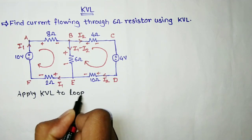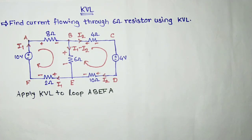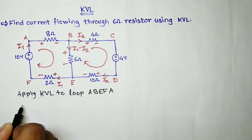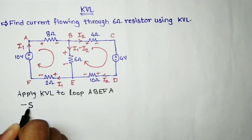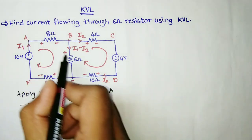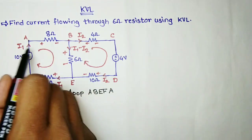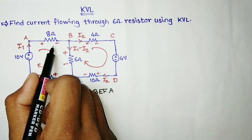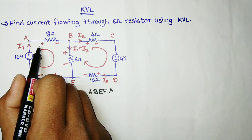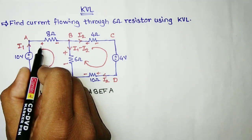Applying KVL to loop A-B-E-F-A: moving from A to B, there is positive to negative, meaning a voltage drop, so it is negative. The current passing is I1. We consider the second sign encountered while moving in our direction. In all our examples we consider the second sign — you may consider the first sign, but you must be consistent throughout the entire equation.